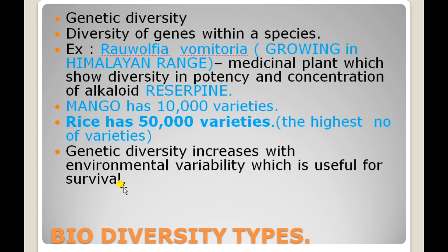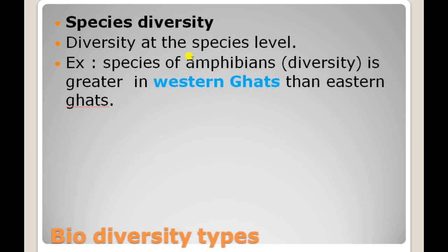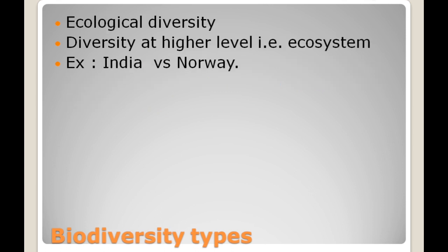Species diversity refers to diversity at the species level. For example, amphibians show greater diversity in the Western Ghats compared to the Eastern Ghats — there are more species of amphibians in the Western Ghats than in the Eastern Ghats.